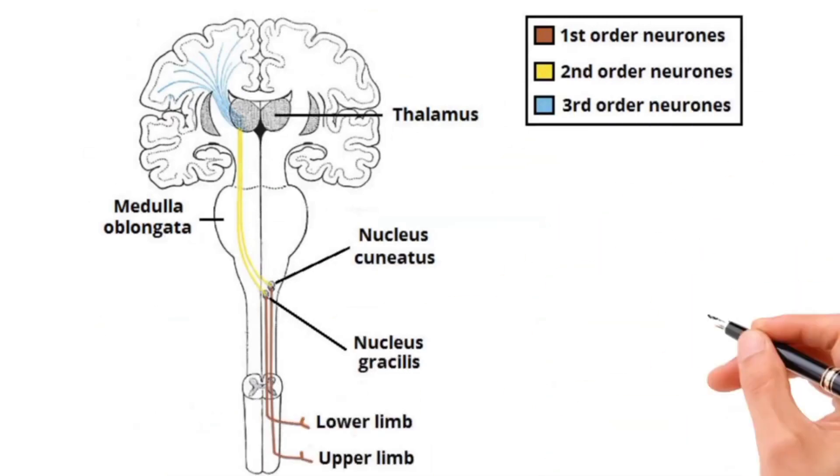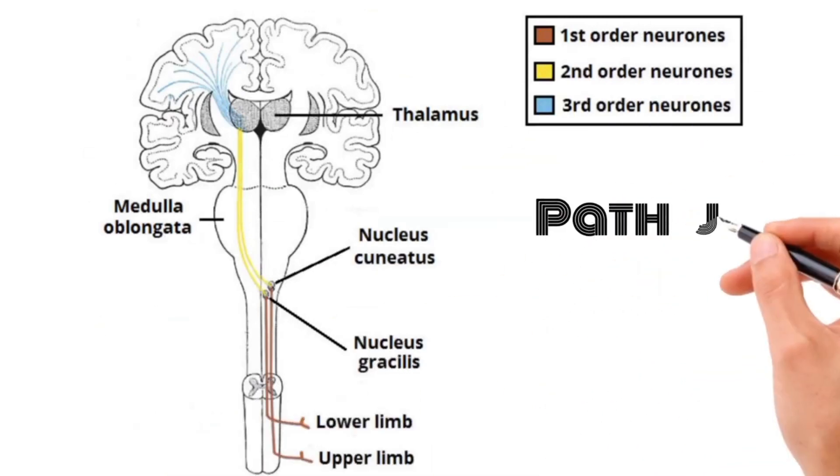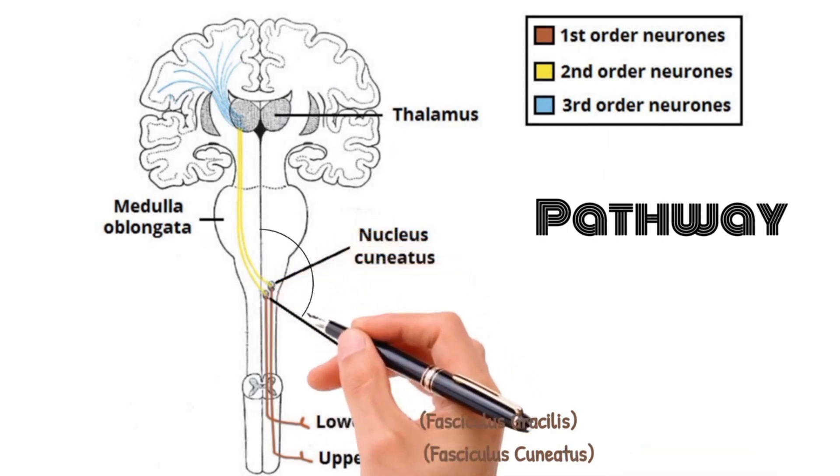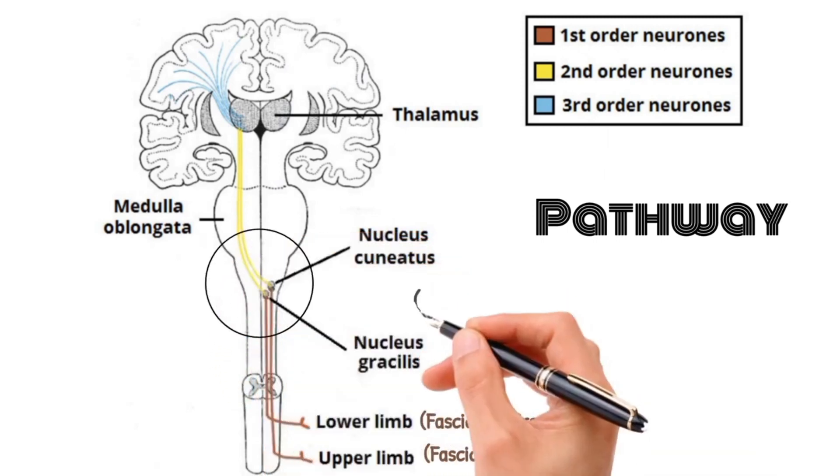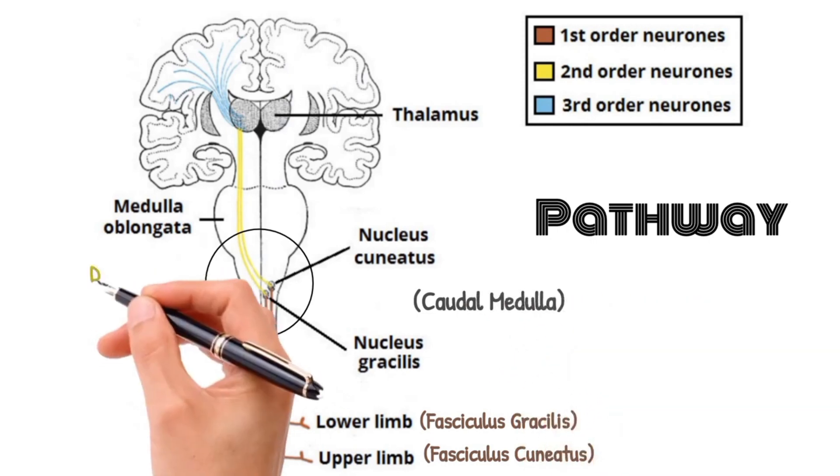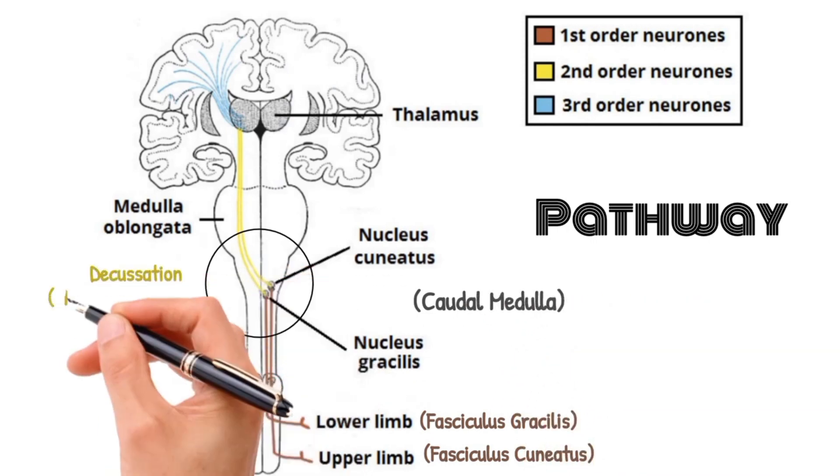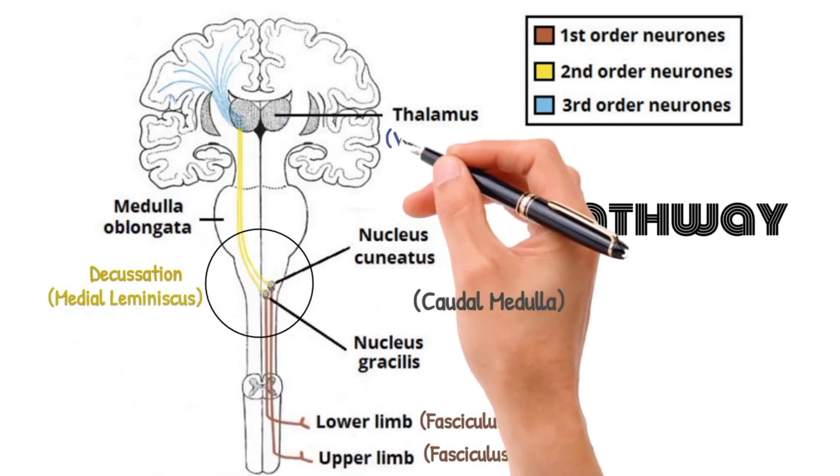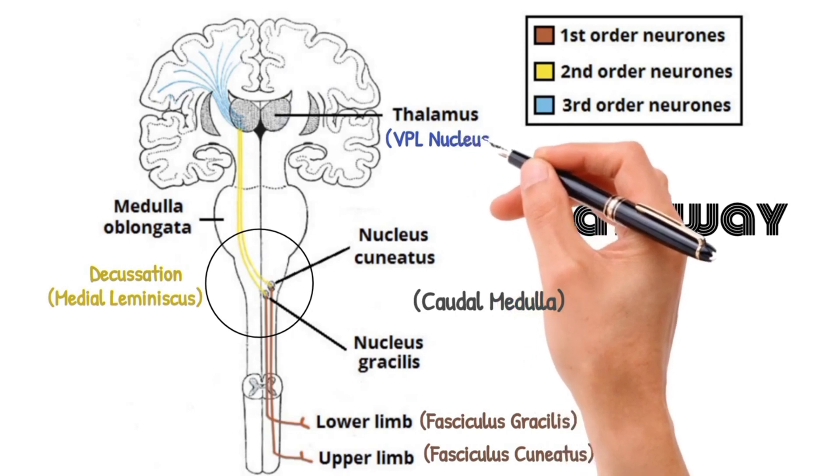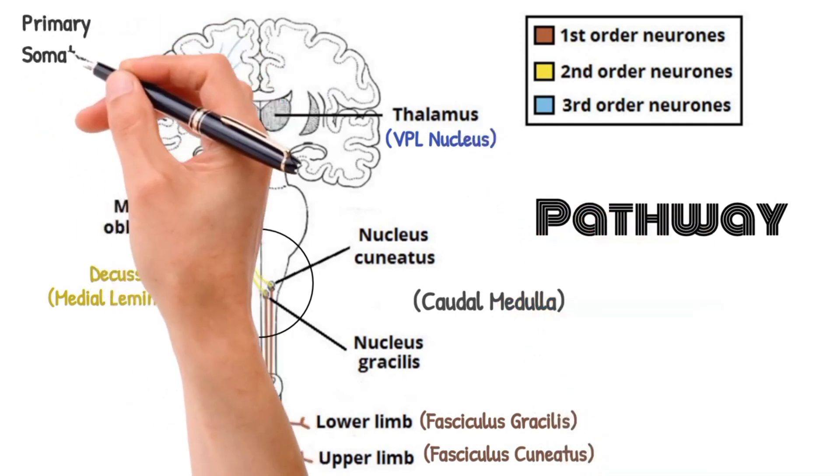Now we will discuss the complete pathway of dorsal column medial lemniscus system. The sensations from lower limb are carried by fasciculus gracilis and sensations from upper limb are carried by fasciculus cuneatus ipsilaterally. These first order neurons synapse at nucleus gracilis and cuneatus respectively in caudal medulla and then these second order neurons decussate immediately in the form of medial lemniscus. These neurons synapse at the ventroposterolateral that is VPL nucleus of thalamus where third order neurons originate and terminate in the primary somatosensory cortex of brain.